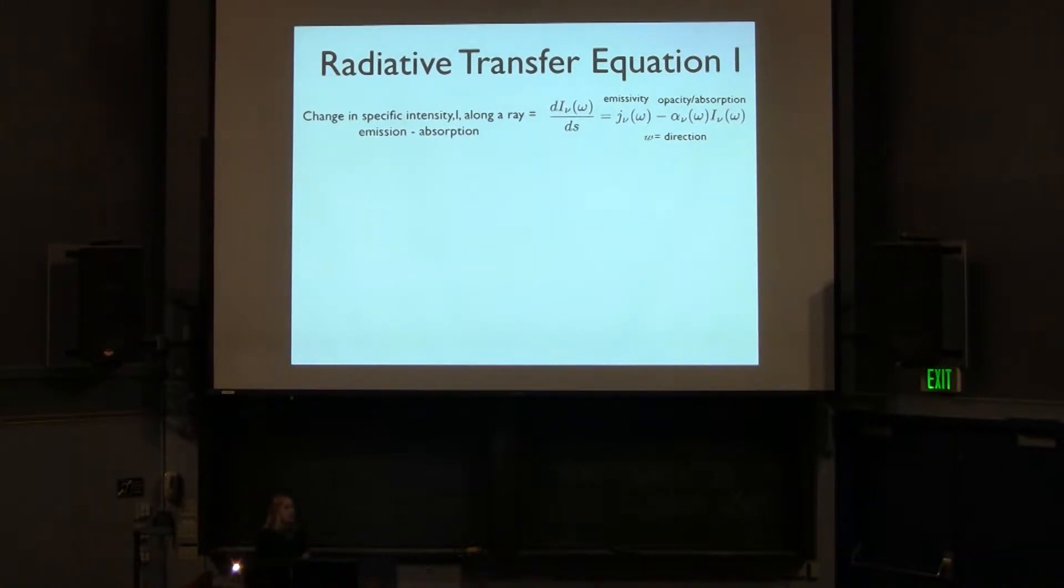Now we get to the radiative transfer part. How do we actually model these molecular line transitions? This is an equation that we saw the previous week. Basically, the radiative transfer equation, which is telling you the rate and change of intensity along a ray, is simply equal to the emissivity minus the absorption. This is applicable for standard radiative transfer, and it's also applicable for lines.